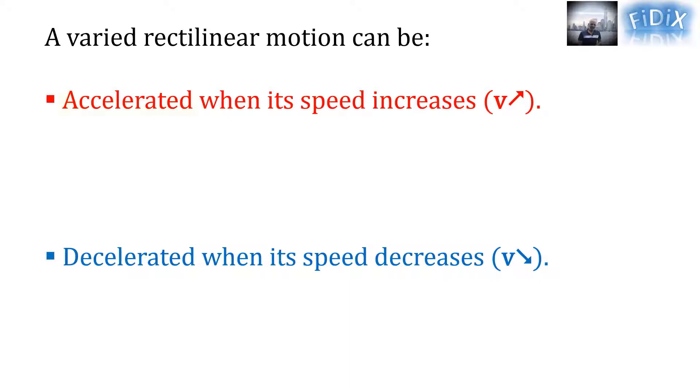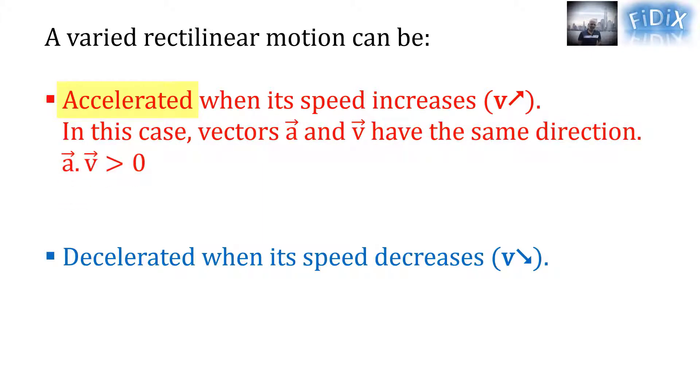When it is accelerated, vectors a and v have the same direction, thus a scalar v is positive, which leads to ax·vx is positive and means that ax and vx have the same sign.